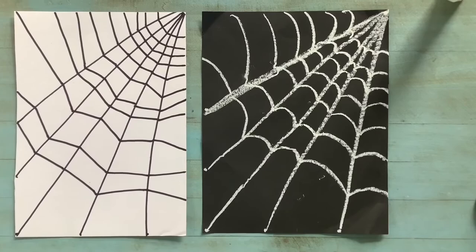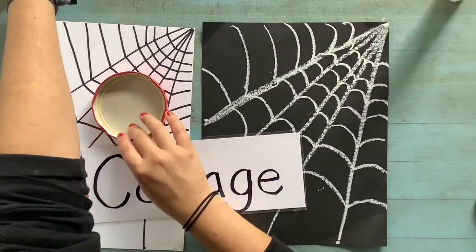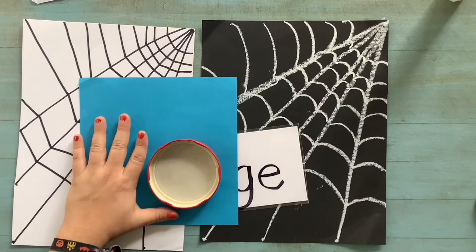Remember, a collage is when we cut and glue paper together. I'm going to get my circle tracer or a lid that will work as a circle tracer, and I'm going to trace my circle.